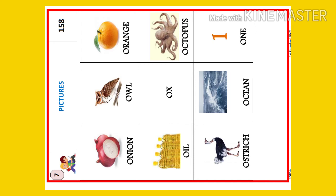Now, read the letters. O-S-T-R-I-C-H, Ostrich. O-C-E-A-N, Ocean. O-N-E, One.